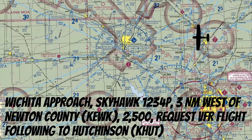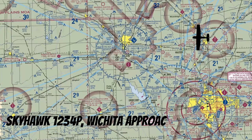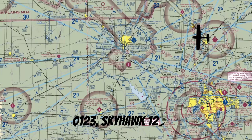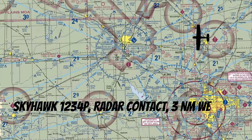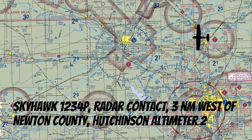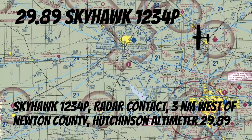ATC responds with a squawk code and then confirms: 'Skyhawk 1-2-3-4 Papa, Wichita Approach, squawk 0-1-2-3.' You read back: '0-1-2-3, Skyhawk 1-2-3-4 Papa.' Then ATC confirms: 'Skyhawk 1-2-3-4 Papa, radar contact 3 miles west of Newton County. Hutchinson altimeter 29.89.' Now that we're on flight following with approach, let's check out some of the things we might see.